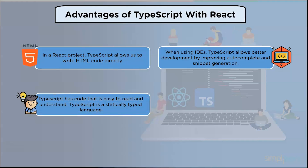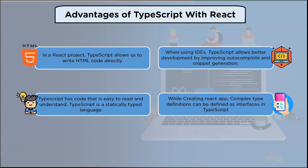TypeScript has code that is easy to read and understand. TypeScript is a statically typed language. The distinction between statically and dynamically typed languages is when type checking occurs — variables in a static language are type-checked. While creating a React app, complex type definitions can be defined as interfaces in TypeScript, which is useful when you wish to use a complex type such as an object with multiple properties.